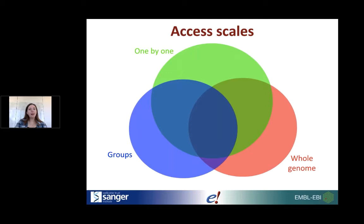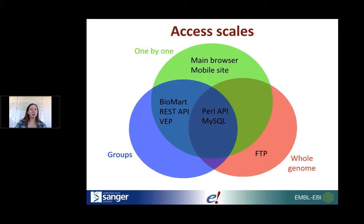Depending on the type of data you're interested in and the manipulations you want to do, there are different ways to access data in Ensembl. If you're just looking at data one by one, the main browser is great — simple search and information comes up. You can also use BioMart, the REST API, and the VEP for data one by one, as well as the Perl API and direct MySQL database access. BioMart, REST API, VEP, Perl API, and MySQL are also good for groups of data. For whole-genome-level access, we have an FTP site where you can download genome-wide data files.